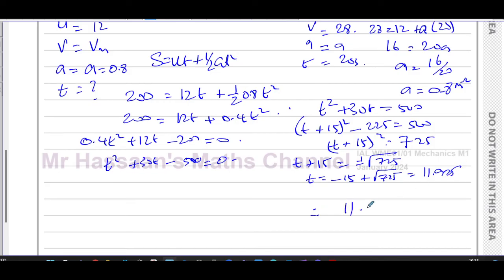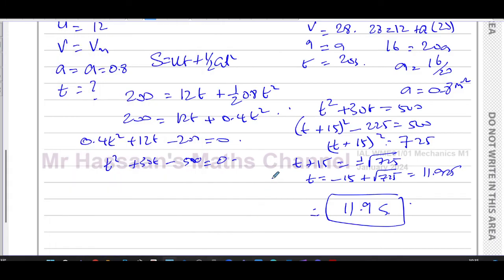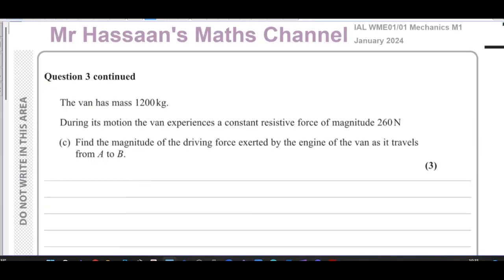Therefore we can say 11.9 seconds. So that's the time it takes to reach the midpoint of AB. We're not going to consider the negative version because that will be minus 15 minus, it'll be a negative time. Of course we can't have a negative time, so 11.9 seconds is our answer. So there's the answer to part B.